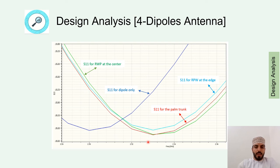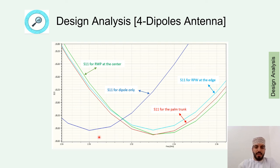Finally, we placed the red palm weevil at the edge of the palm trunk and obtained a frequency of 2.33 GHz with S11 of −16.332 dB. So when the palm tree is infected with the insect, the frequency increases, and we can detect the presence of the red palm weevil in the palm trunk by the high transmitted power loss.